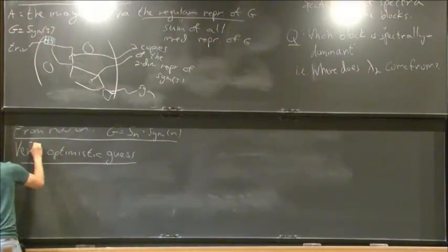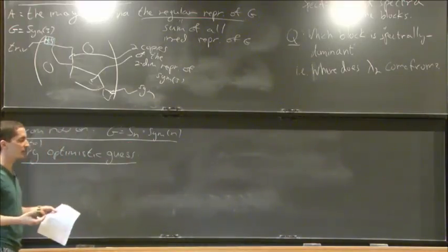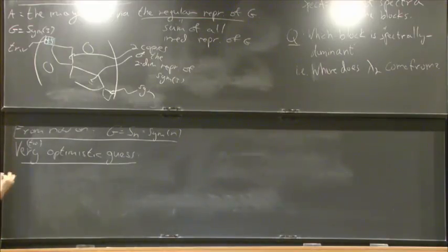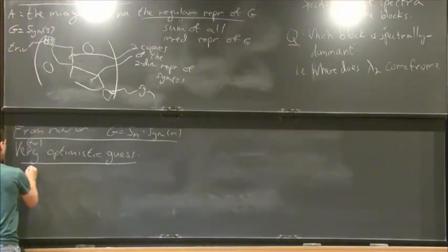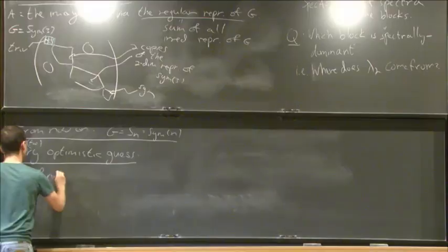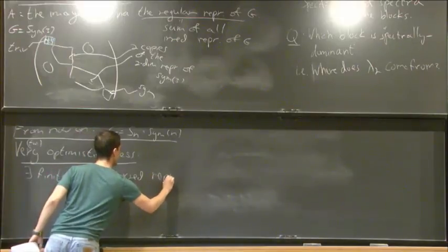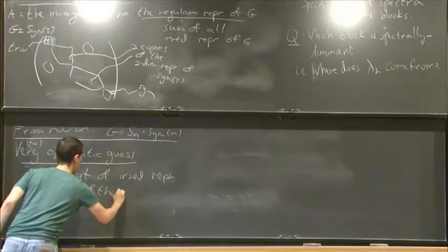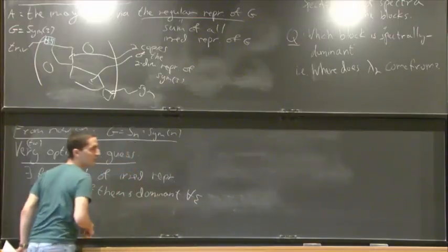So there is this very, I would say very, or perhaps even very optimistic guess. Optimistic guess, perhaps even too optimistic, is that the following happens. That there is always a, so every, I mean, every symmetric group has only finitely many irreducible representations. But if I look at all of them, the series, it's possible that there is only a finite number of series of representations such that one of them is always dominant. So I would say that there is a finite set of irreducible representations such that one of them is dominant. For every sigma? Yes, for every sigma. I mean, for every sigma, one of them is dominant.